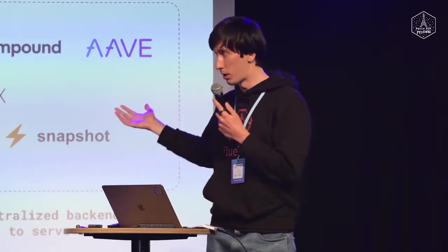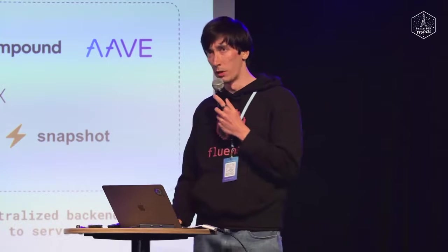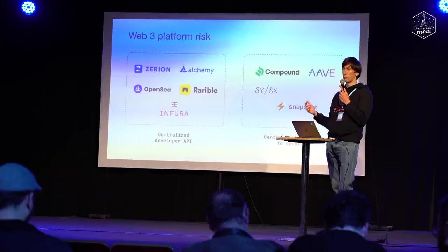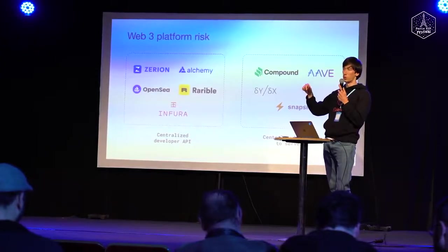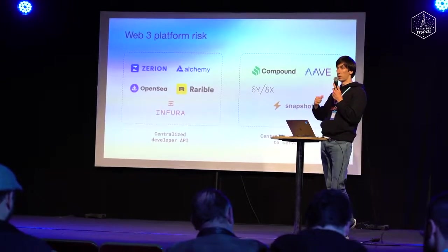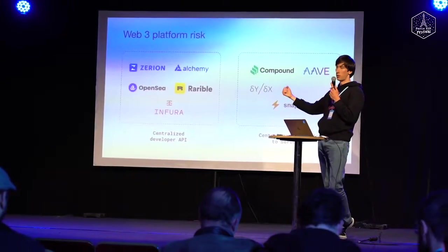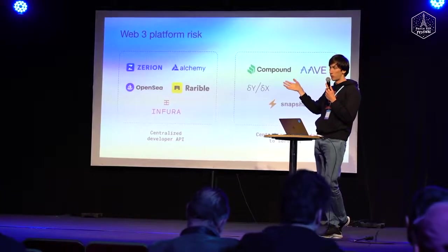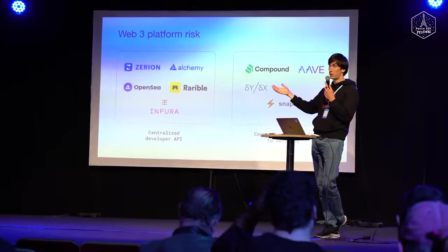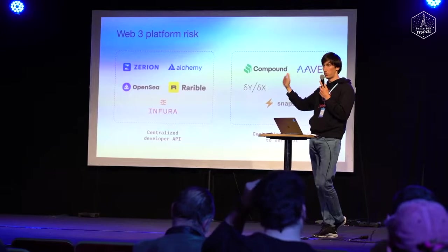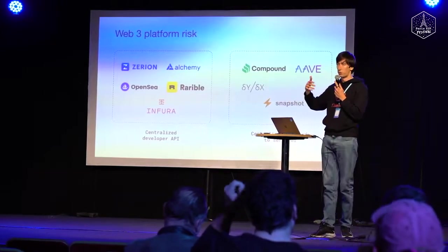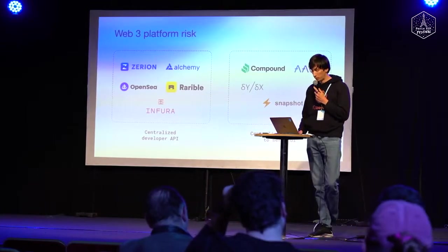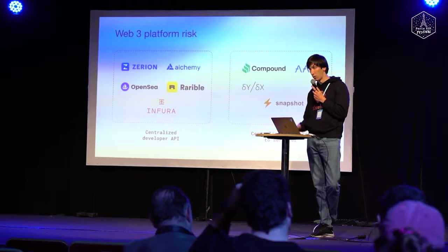It would be nice to solve this and enable real safe composability of applications — like the level of composability we have inside blockchains, where smart contracts are immutable. If I deploy a smart contract and remove the admin, it will be there forever. It's safe to build on top of because it cannot be changed and cannot cut off access to whoever uses it. It would be nice to have something similar — not on-chain but off-chain.